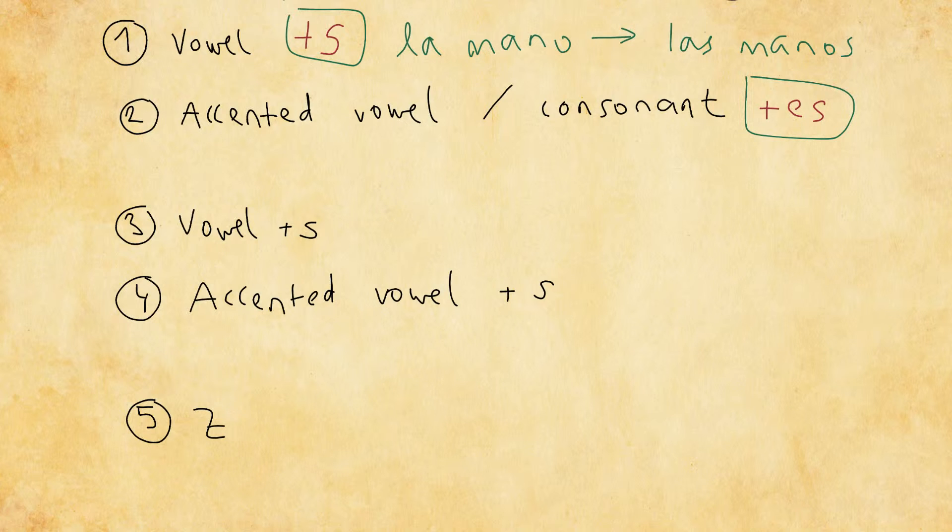a word ending with an accented vowel would be rubí, el rubí, which means ruby. El rubí. And to make a plural out of that, you would say los rubíes. Los rubíes.